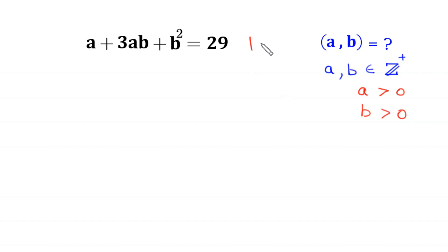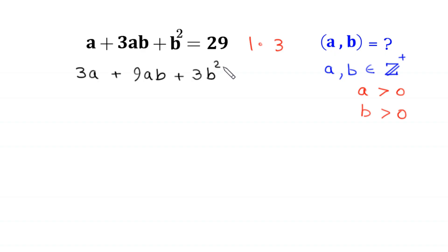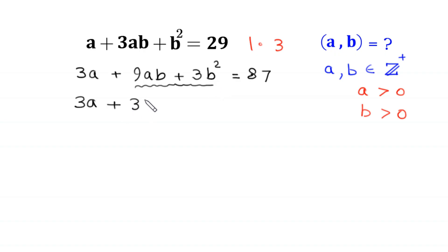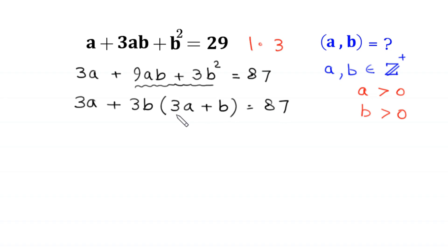Let's start by multiplying both sides of this equation by 3. This will become 3a + 9ab + 3b² = 87. From the terms 9ab + 3b², we can factor out 3b, leaving 3b times (3a + b), so the equation becomes 3a + 3b(3a + b) = 87.